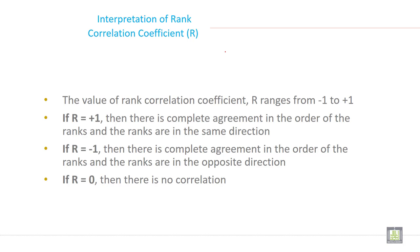The value of Rank Correlation coefficient ranges from minus 1 to plus 1, same as Pearson correlation. If R equals plus 1, there is complete agreement in the order of the ranks and the ranks are in the same direction. If R equals minus 1, it means perfect negative correlation. If R equals 0, then it means there is no correlation.